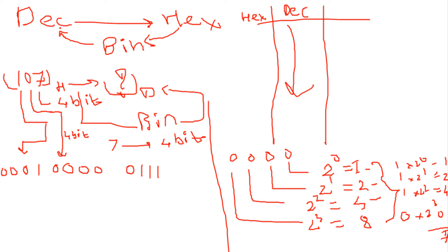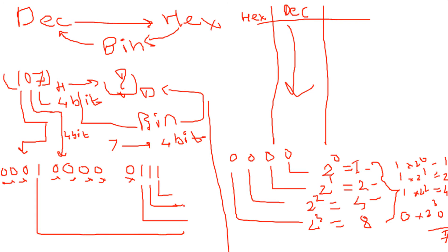Now the final step — binary to decimal — which we did before. The leading zeros are don't-care zeros and will not affect our sum. Starting from the right: 1 into 2 raise to 0 = 1; 1 into 2 raise to 1 = 2; 1 into 2 raise to 2 = 4.